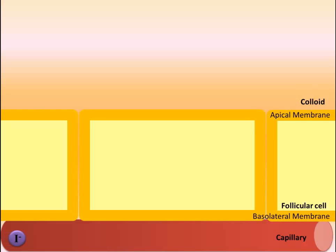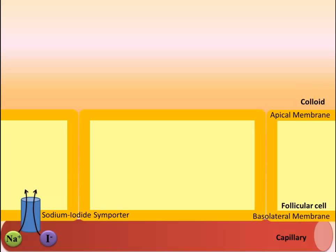The first step in thyroid hormone synthesis is the trapping of iodide molecules from the diet. Iodide is absorbed from the GI tract and travels through the bloodstream to thyroid follicular cells. The follicular cells take up the iodide through their basolateral membrane using a sodium iodide symporter. This is an example of secondary active transport, as the symporter uses the sodium gradient to pump iodide ions against their concentration gradient into the cell.